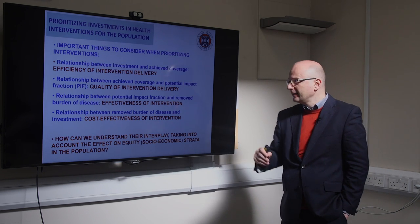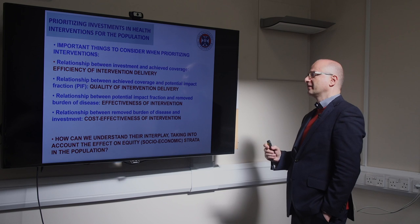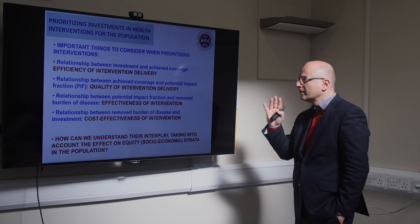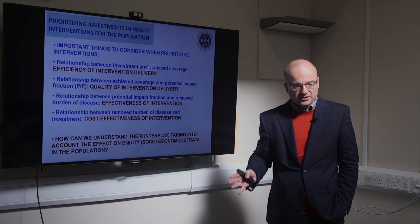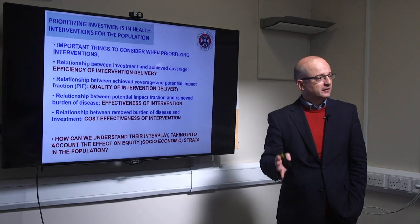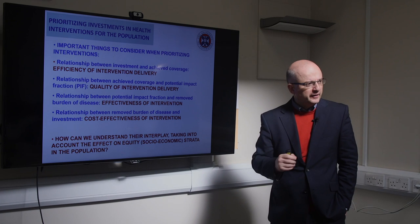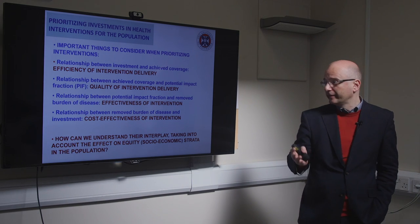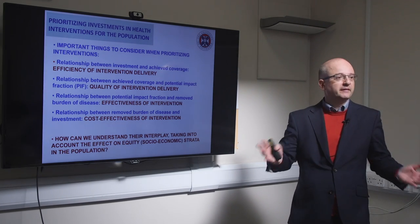From this first type of thinking about prioritization, there are several important things to consider. Firstly, you need to understand the relationship between investments you make and how much of the population you can actually cover — that is captured by the efficiency of intervention delivery. How much does it cost to cover 10%, 20%, 50%, 100% of the population? For some interventions it doesn't cost much; for others it costs quite a lot.